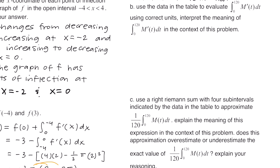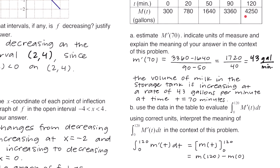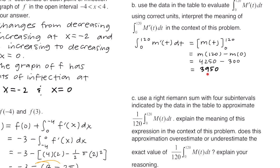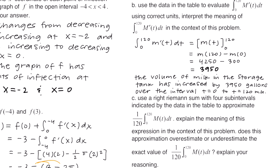Part b says use the data in the table to evaluate the integral from 0 to 120 of m prime of t dt, and interpret its meaning. The integral of m prime of t gives m of t, evaluated from 0 to 120. So we plug in m of 120 minus m of 0, which is 4,250 minus 300, giving 3,950. The meaning: the volume of milk in the storage tank increased by 3,950 gallons over the time interval from t equals 0 to t equals 120 minutes.